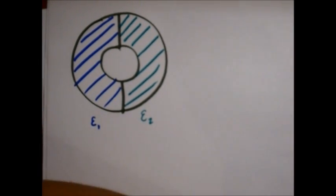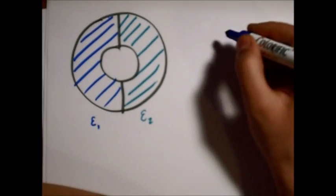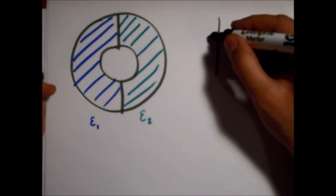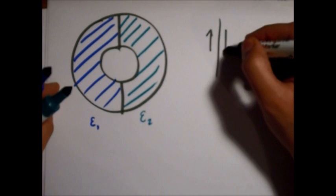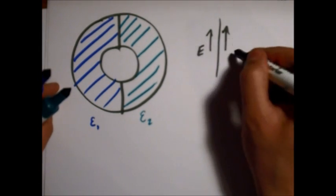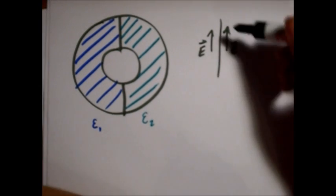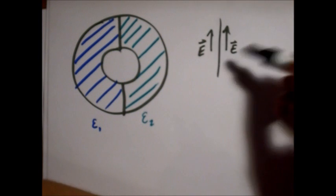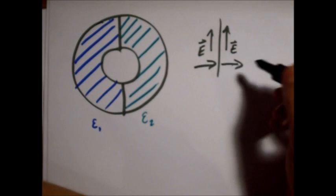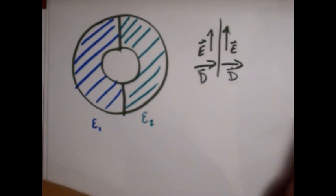So, we know from our boundary conditions that along this boundary right here, the parallel components of the electric field are going to be equal. And because there's no free charges along this boundary, the perpendicular components of the displacement field will also be equal.